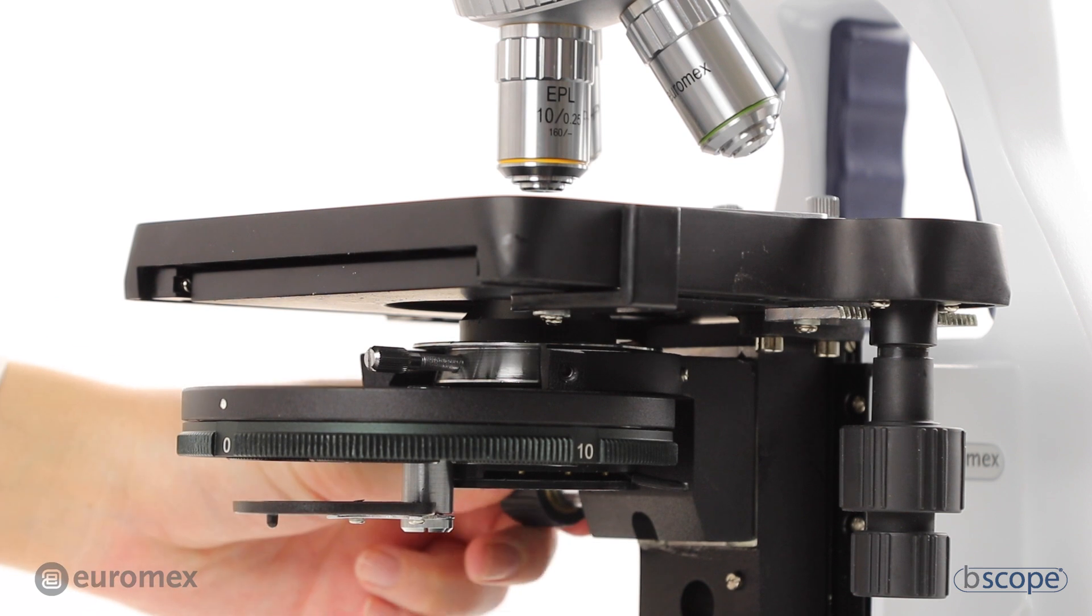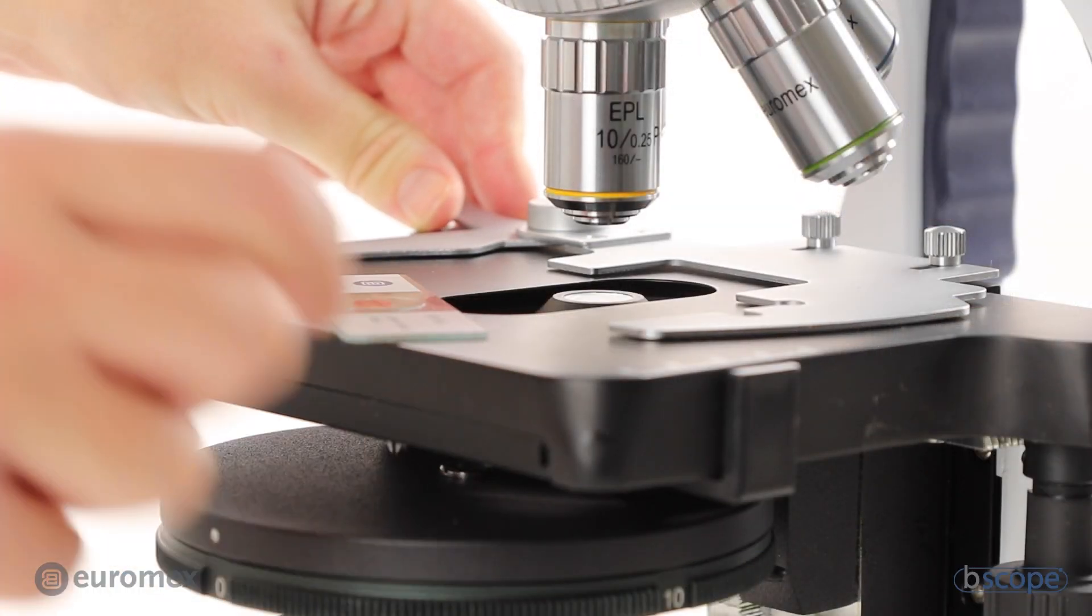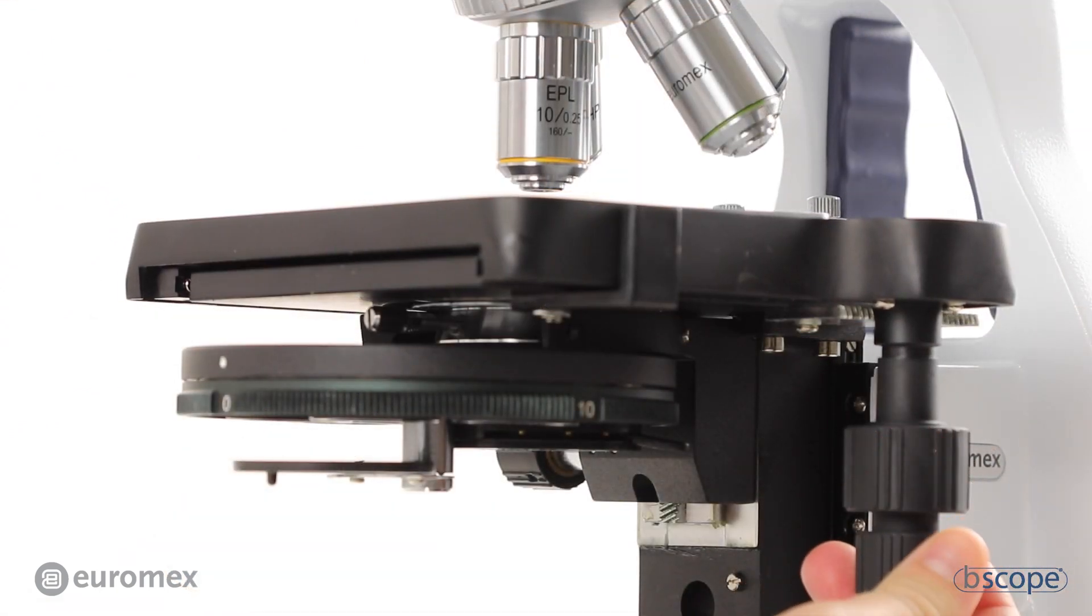Turn up the condenser, put a slide on the stage. Focus on the specimen and remove the slide.